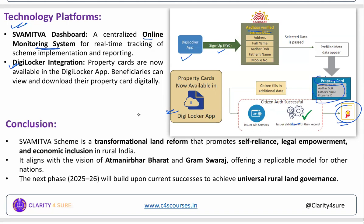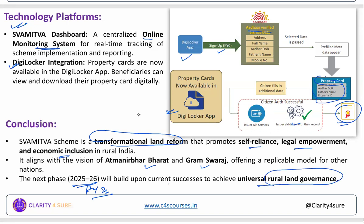In conclusion, the Swamitwa scheme is a transformational land reform that promotes self-reliance, legal empowerment, and economic inclusion in rural India. It aligns with the vision of Atmanirbhar Bharat and Ram Swaraj, offering a replicable model for other nations as well. In the next phase, FY26 will build upon current success to achieve universal land governance in our country.